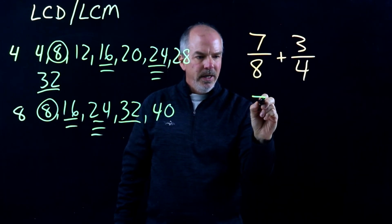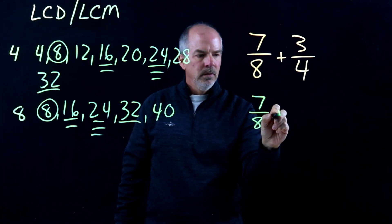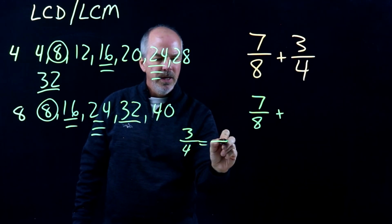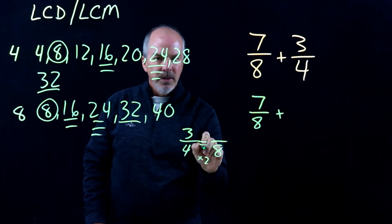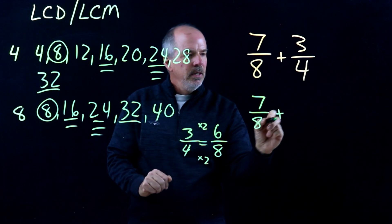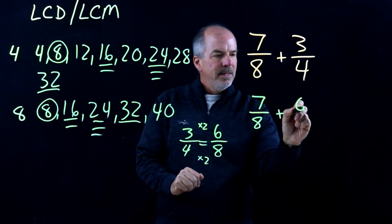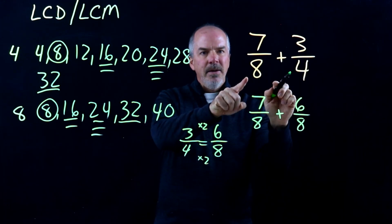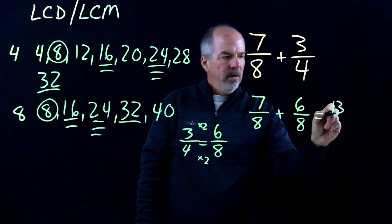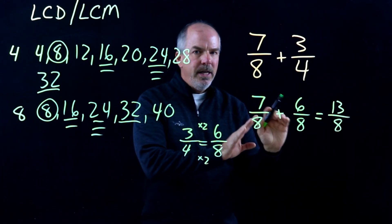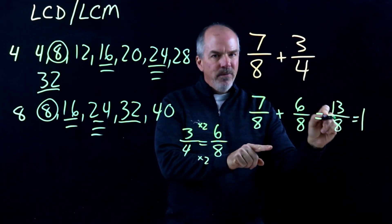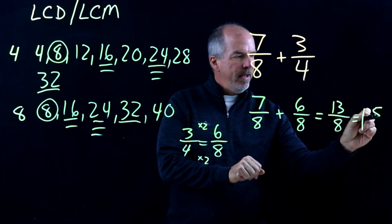So I can leave 7/8 as 7/8. Now 3/4 — I need to change that to something over 8. So 3/4 equals something over 8. That's times 2 in the denominator, so again with the equal sign, we have to keep it balanced. So 3 times 2 is 6. So 7/8 plus 6/8 — I've found a common multiple, I've found equivalent fractions. Now I'm going to add and I get 13/8. We don't want to leave it as an improper fraction. So if I take 8 out of that, that gives me 1 and I'll have 5 more eighths left over. So 1 and 5/8 is my final answer.